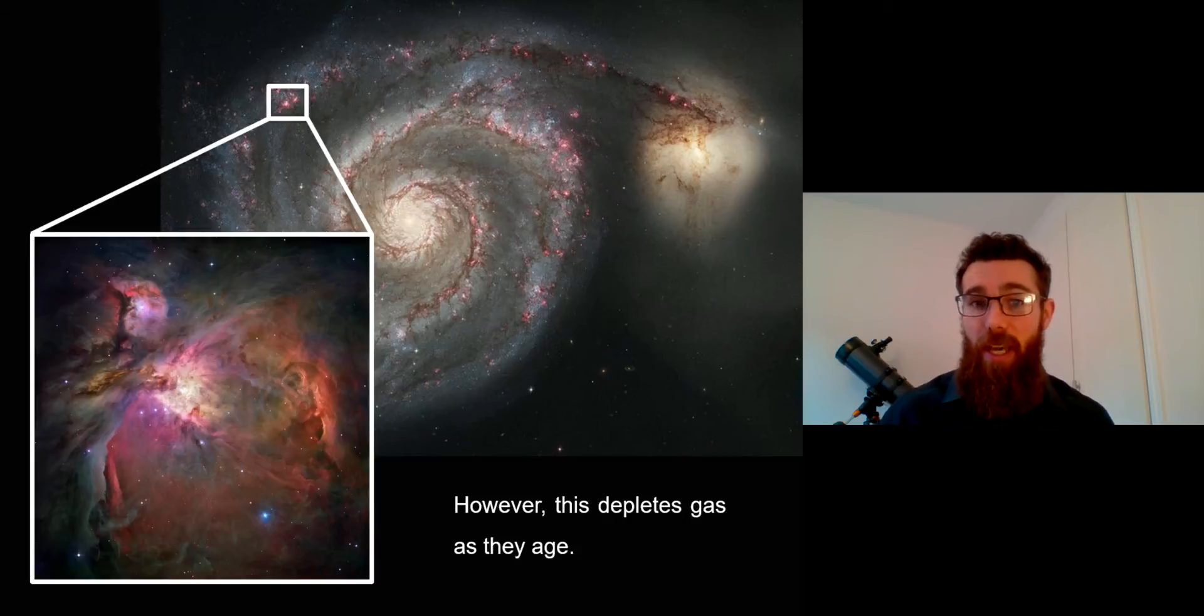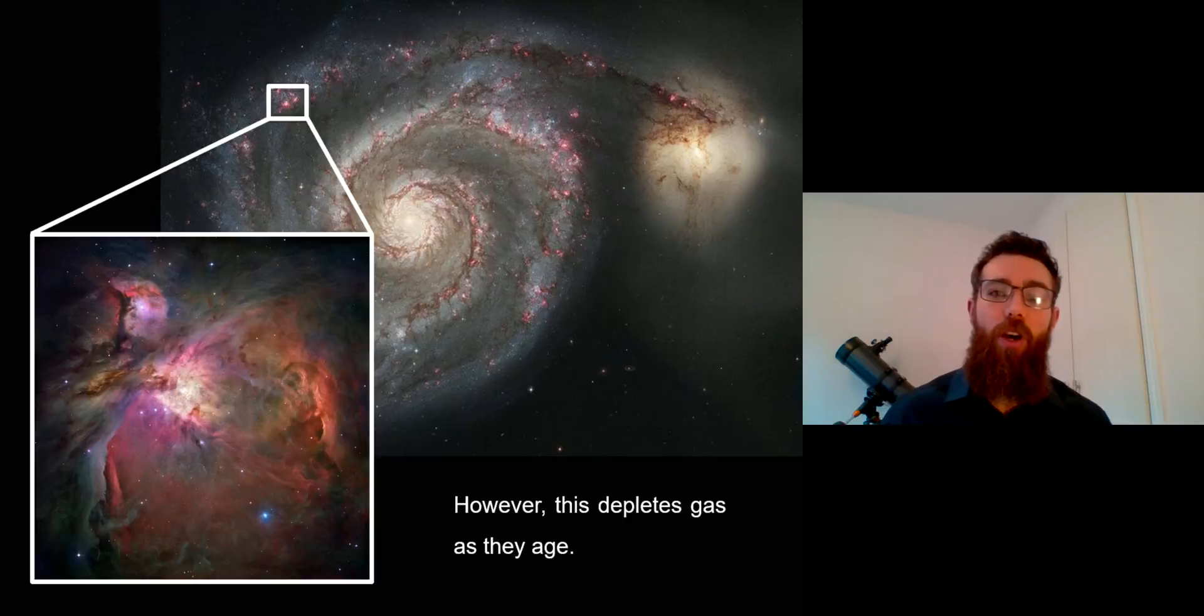Also, as the galaxy ages, that gas will be depleted. So over time, that gas gets turned into stars and you have less and less gas in the galaxy. So therefore, star formation kind of falls off as they start to age.